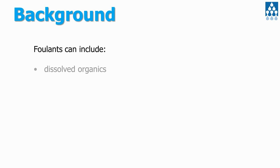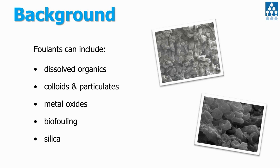Typically there are a number of different foulants that can affect membranes. These include various types of materials: organics, metal oxides, biofouling, and silica — some of the most common ones for desalination membranes. Silica is something that's particularly important to the work at Victoria University, and we'll hear more about that later this morning.